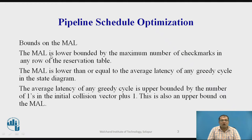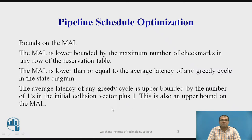Regarding bounds on the MAL: the MAL is lower bounded by the maximum number of check marks in any row of the reservation table, and this is lower than or equal to the average latency of any Greedy Cycle in the state diagram. The average latency of any Greedy Cycle is upper bounded by the number of ones in the initial collision vector plus 1, which is also an upper bound on the MAL.